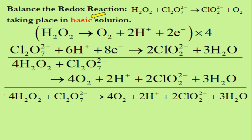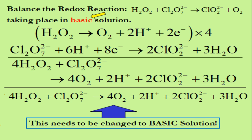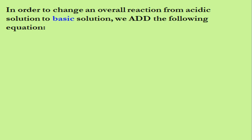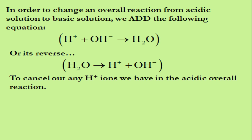However, the original instructions told us to write the balanced overall redox reaction in basic solution. This reaction has H⁺ ions in it, so it is an acid solution. If we had been asked to write the balanced overall reaction in acid solution, this would be our final answer. But in this case, we must change it to basic solution. To do this, we add either H⁺ + OH⁻ → H₂O, or its reverse H₂O → H⁺ + OH⁻, whichever works to cancel out any H⁺ ions in the acidic overall reaction.